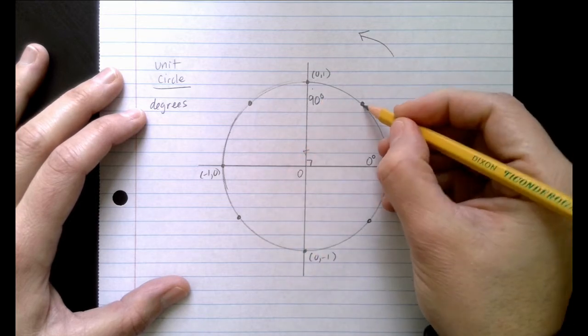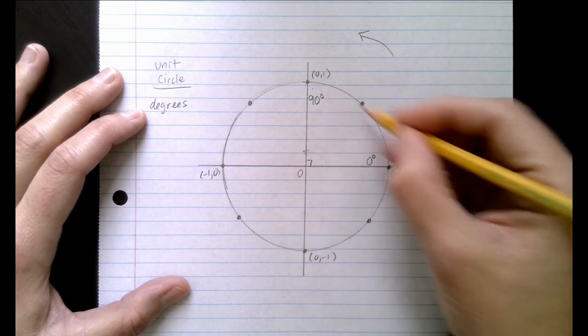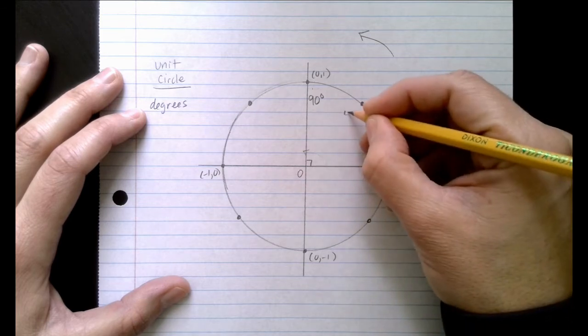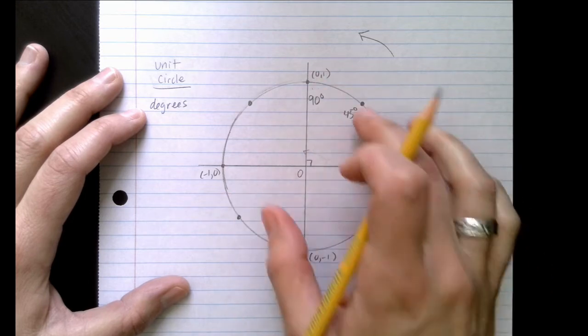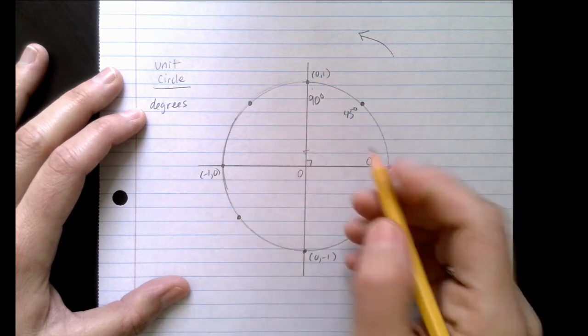This angle right here is halfway between that. So what's half of 90 degrees? It is 45 degrees. So these are the three beginning points in quadrant one.